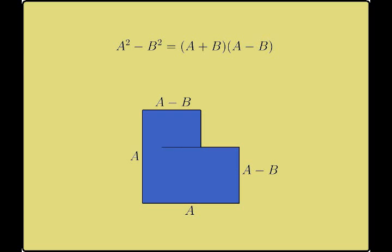If we extend one of the cuts from the removal of the square with sides of length B, we form two rectangles, one with dimensions A by A minus B and one with dimensions B by A minus B.